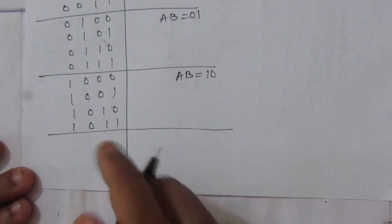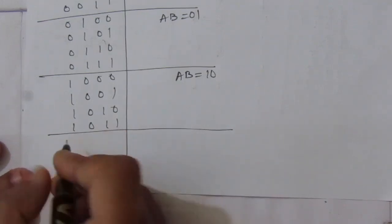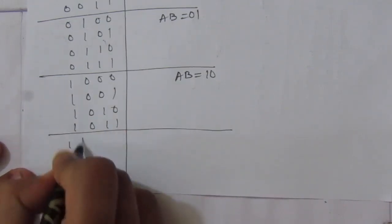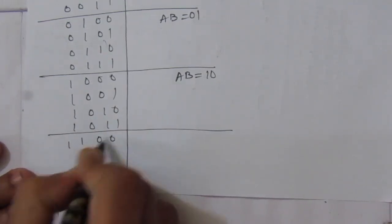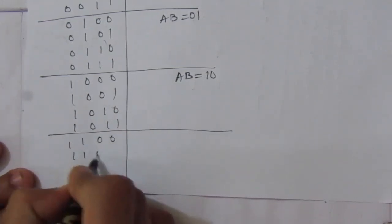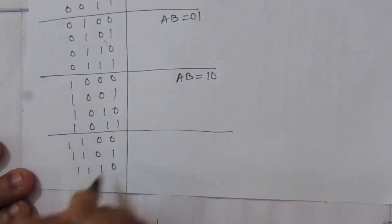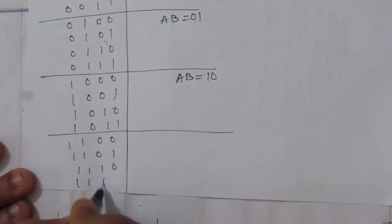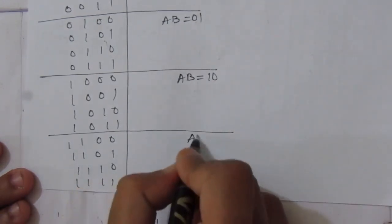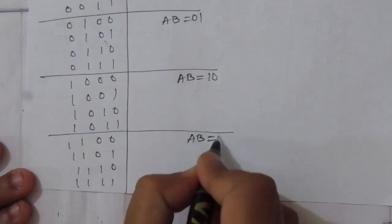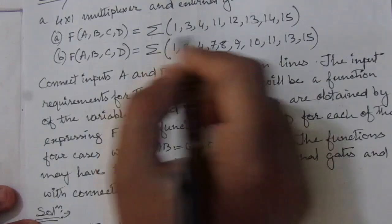And the last case will be AB equal to 11: inputs 1,1,0,0 then 1,1,0,1 then 1,1,1,0 then 1,1,1,1.